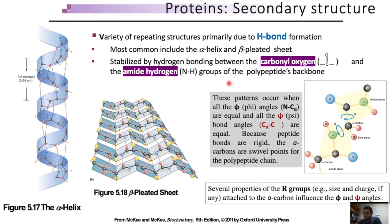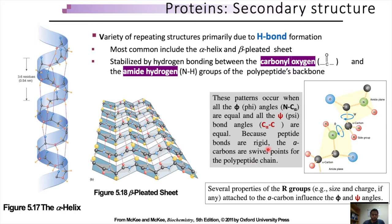In a peptide bond there are different torsion angles present: the phi angle, which is between the alpha carbon and the nitrogen, and the psi angle, which is between the alpha carbon and the next carbon. There is also a third angle, the omega angle, which represents the peptide bond itself — a very rigid bond. The orientation of these angles affects hydrogen bond formation. When phi and psi angles are in appropriate positions they enable hydrogen bond formation, and since peptide bonds are very rigid, only the phi and psi torsion angles are important for the formation of secondary structure.